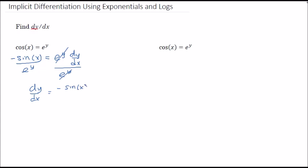Negative sine of x over e to the y. Now a lot of the time when we do an implicit diff problem we can just leave it in terms of x and y, but in this case we actually have an easy way to simplify this. If you note, we actually know exactly what e to the y equals.